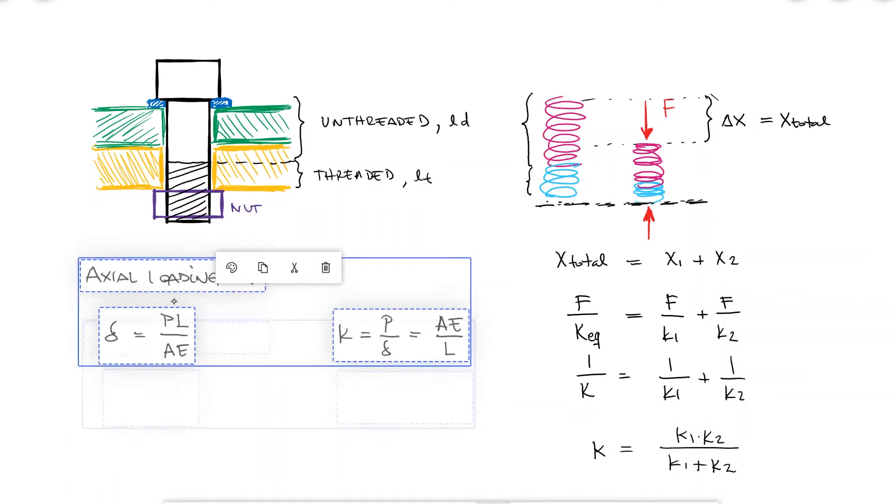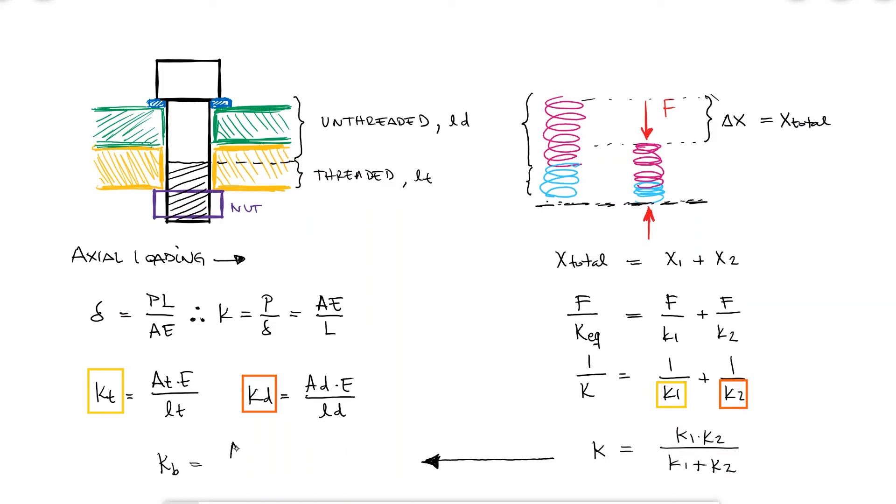Since the two springs are the two zones of the bolt, the threaded and unthreaded zones, KT and KD, the bolt stiffness is equal to AD times AT times E over AD times LT plus AT times LD.